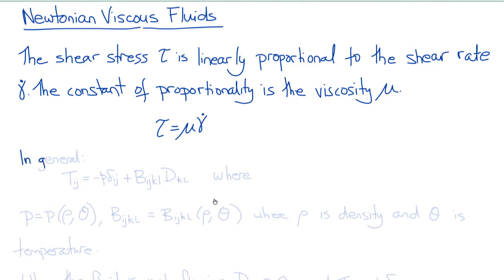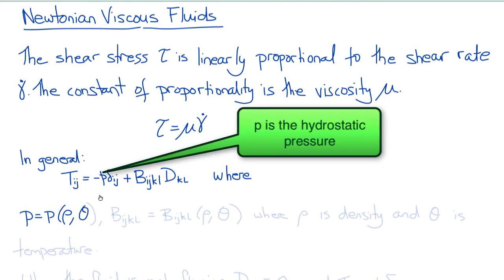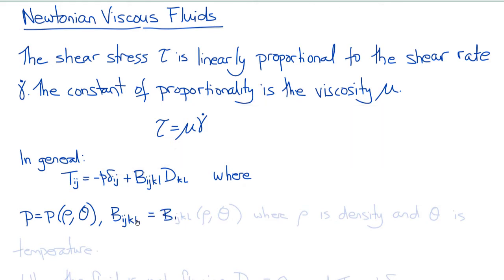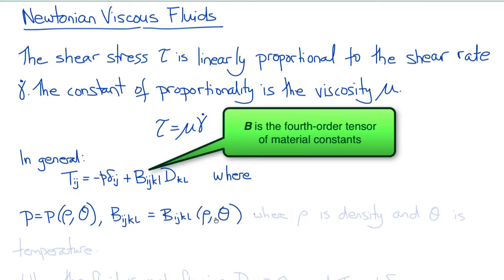But this equation isn't a constitutive equation, because a constitutive equation must give us all of the components of the stress tensor. So in general, a linear relationship between the stress tensor T and the rate of deformation tensor D will look like this: T_ij equals minus p delta_ij plus B_ijkl times D_kl, where p is the hydrostatic pressure as a function of density and temperature, and B_ijkl is the fourth-order tensor of coefficients relating the stress to the rate of deformation.